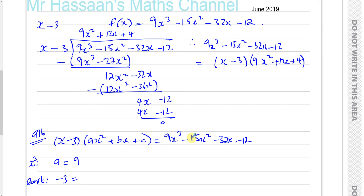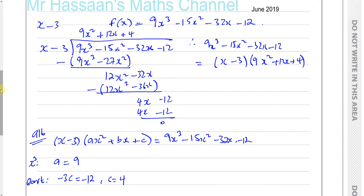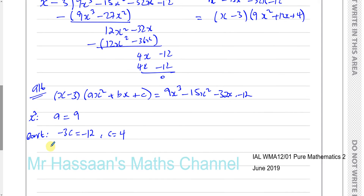The constant term on the right is minus 12, so minus 3c equals minus 12, giving c equals 4. To find b, we look at the x squared term. On the left, the x squared terms come from x times bx (giving bx squared) and minus 3 times ax squared (giving minus 3a).